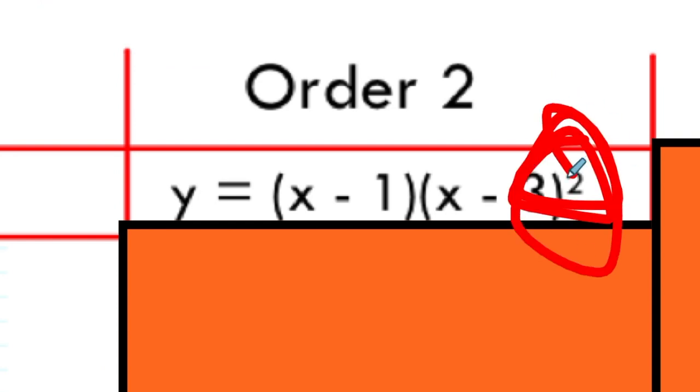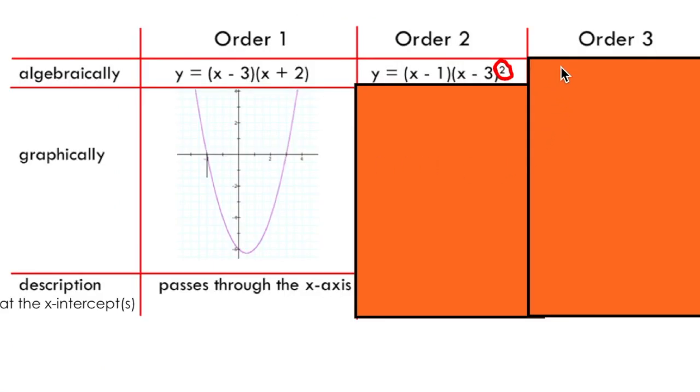That's right. This exponent indicates that I have an x-intercept of order 2 at x equals 3. You can think of this as two x-intercepts at 3 on top of each other.